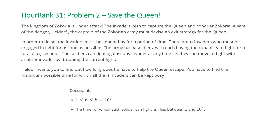You have to find the maximum possible time for which all N invaders must be kept busy. The constraints are that N is greater than or equal to 1 and less than or equal to K, K is less than or equal to 10 to the 4th, and the total fight time A_i for each soldier lies between 1 and 10 to the 6th. Let's take a look at one of the two examples HackerRank provided.